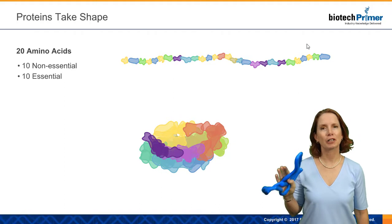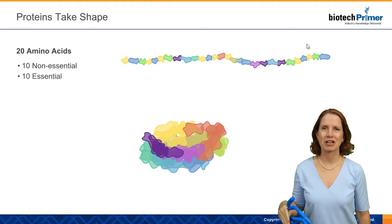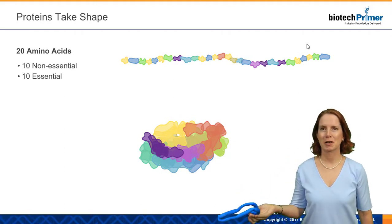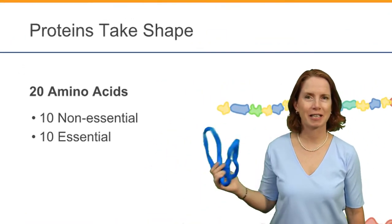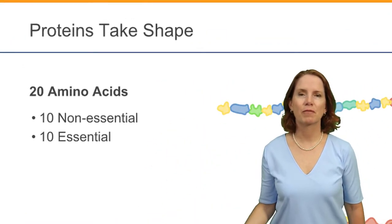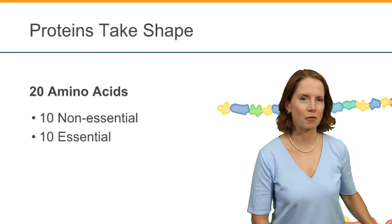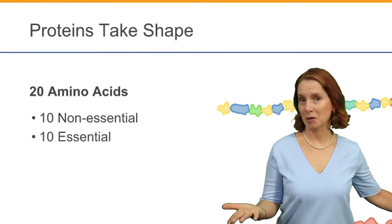And I'm going to tell you a little bit about that on the next slide, but first I just want to address we have 20 amino acids, 10 non-essential, 10 essential. Many of you have probably heard this terminology before. You may not know exactly what it means though.